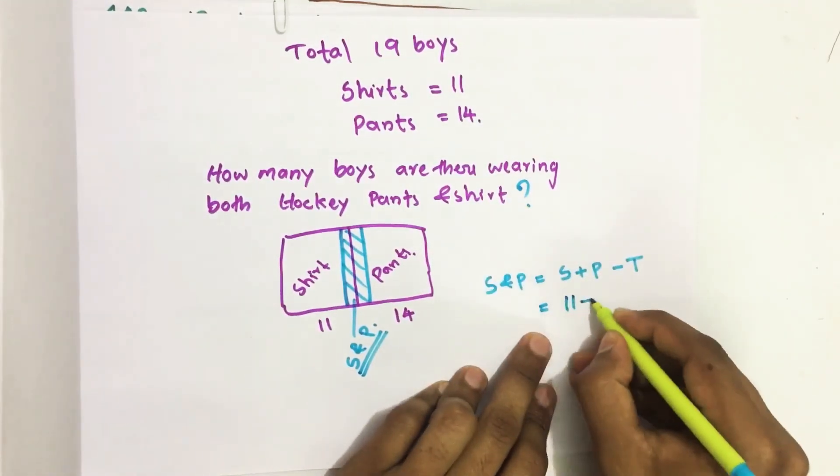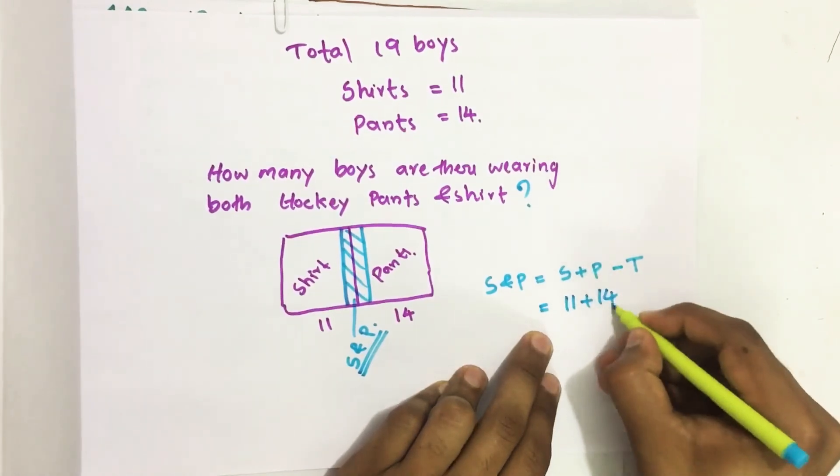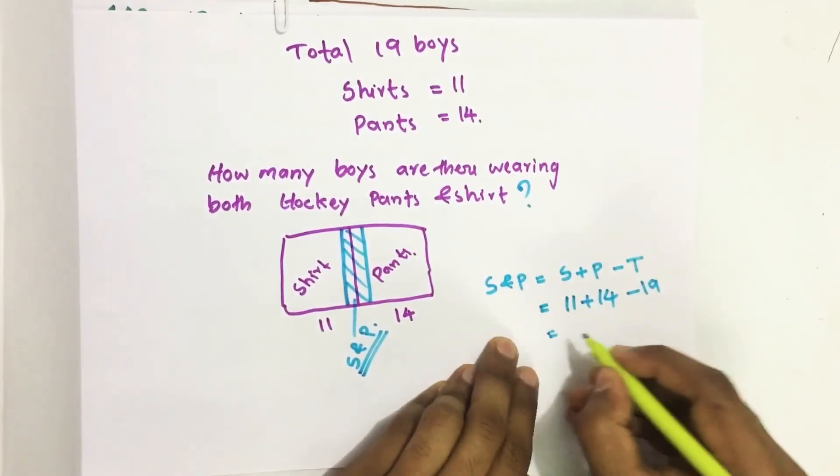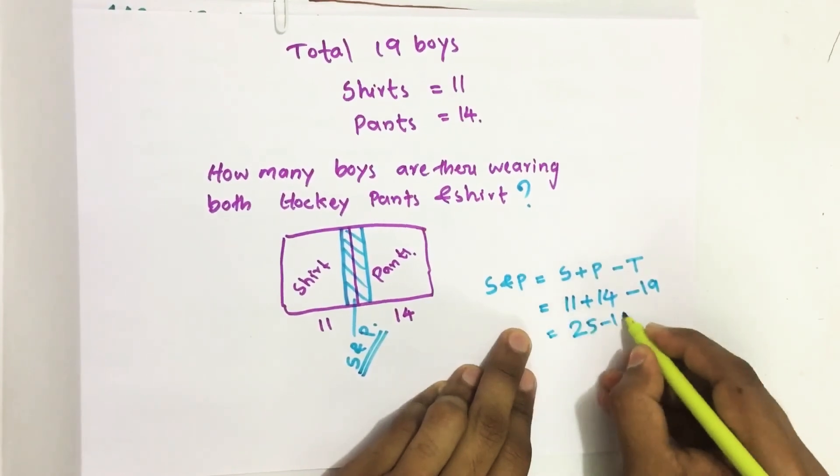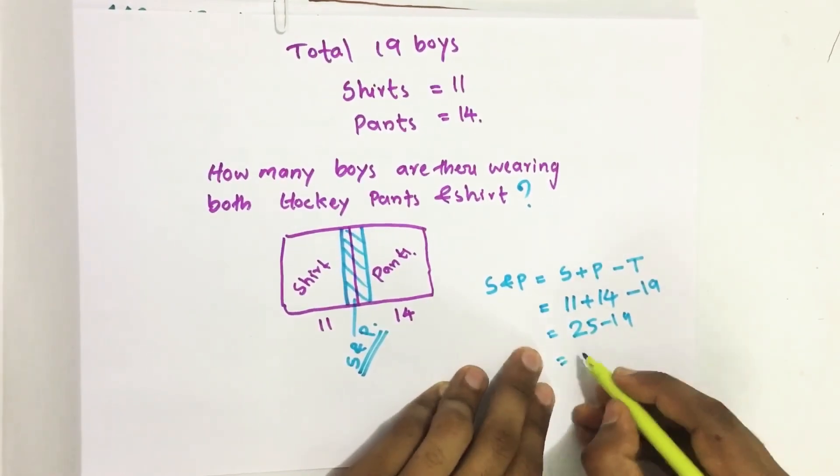So 11 plus hockey pants 14 minus total 19. We get 25 minus 19, 6.